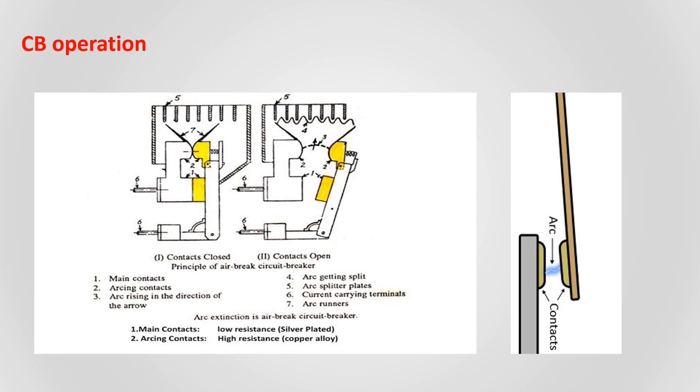If you see the diagram on the right hand side, the moving contact comes closer to the fixed contact. At the point of contact, arc is produced which may damage the contact. So in order to protect the main contact, we are using an arc contact. During closing operation, the arc contact closes first and then the main contact closes.